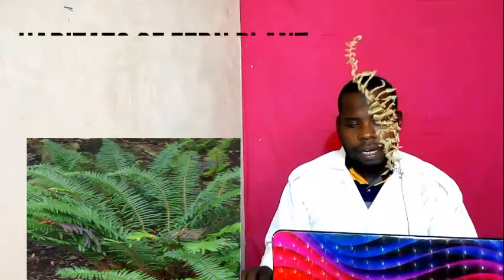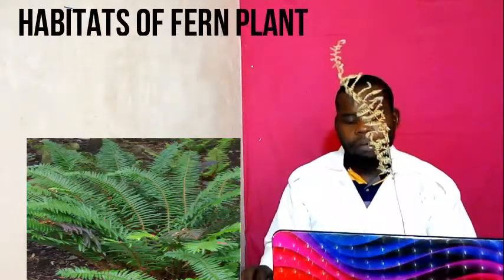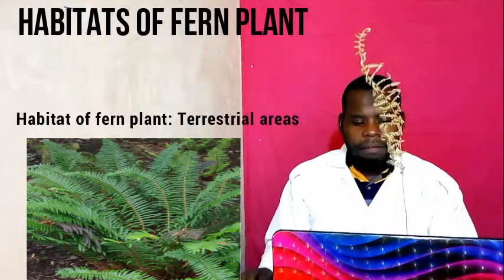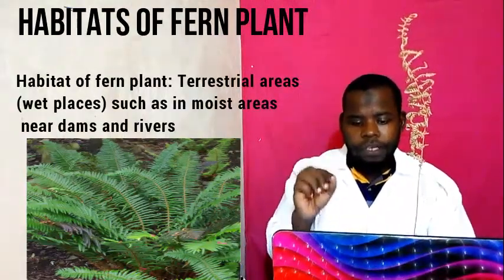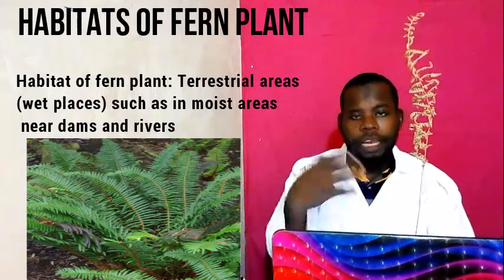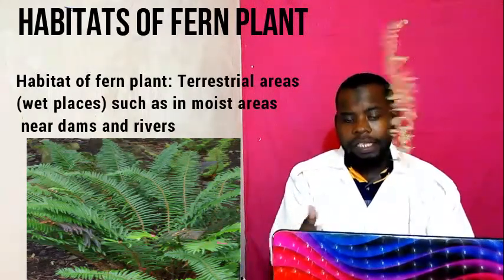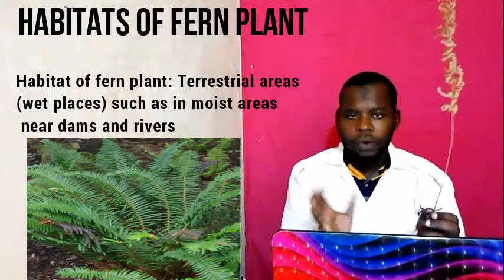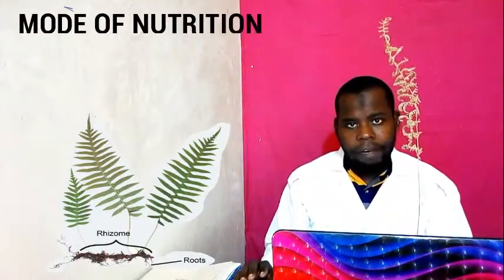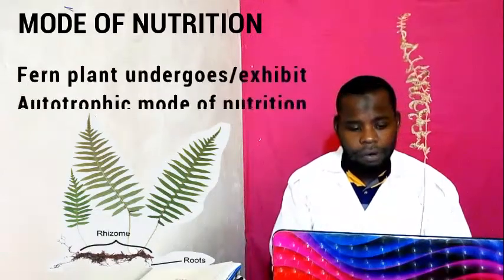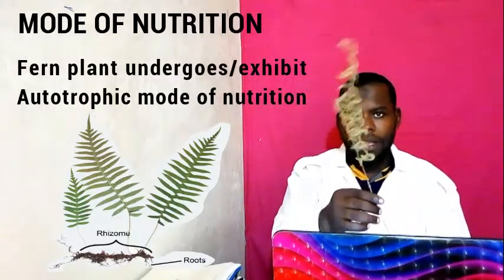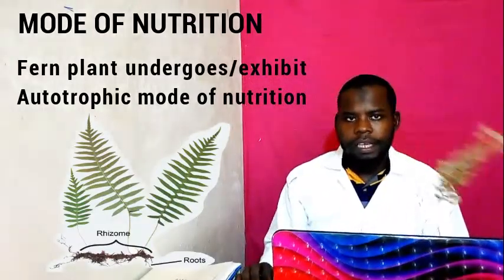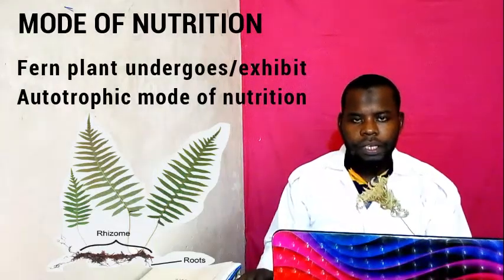Another classification of Fern Plant — we look at the habitat. Fern Plant is found in terrestrial areas but mostly in wet places, such as in moist areas, near dams and rivers, and cold places. This Fern Plant undergoes autotrophic mode of nutrition because this plant can manufacture its own food. So the mode of nutrition is autotrophic.